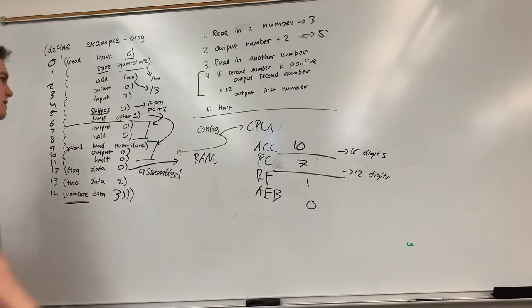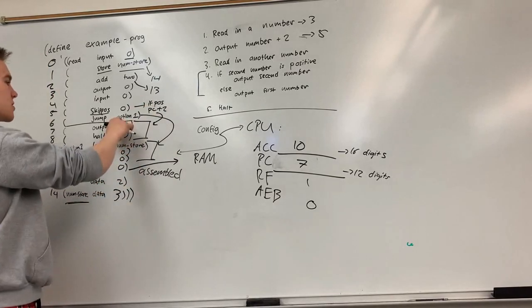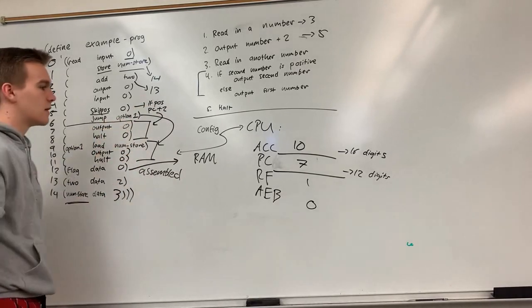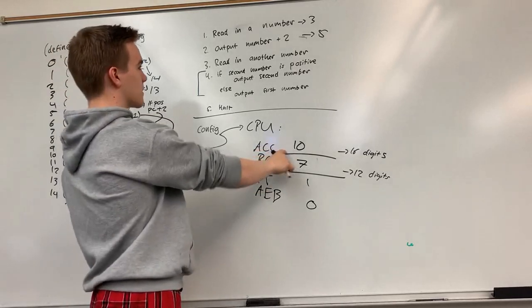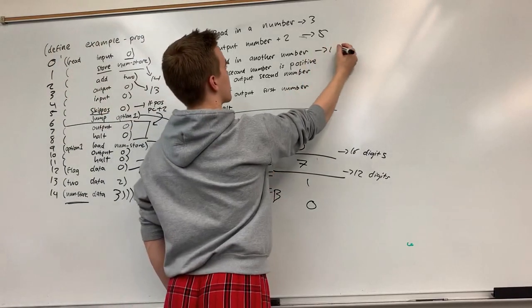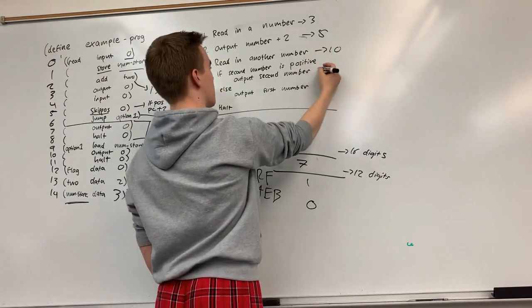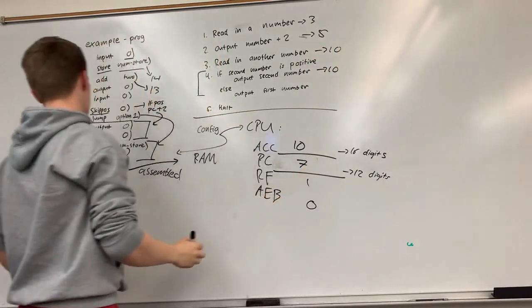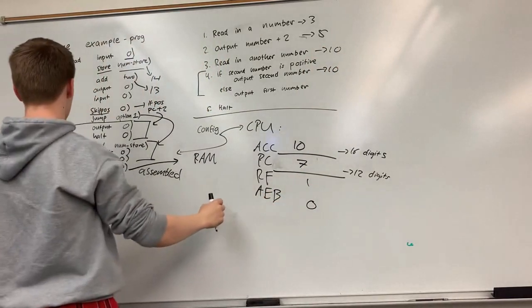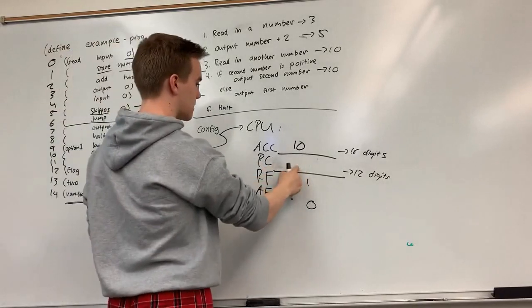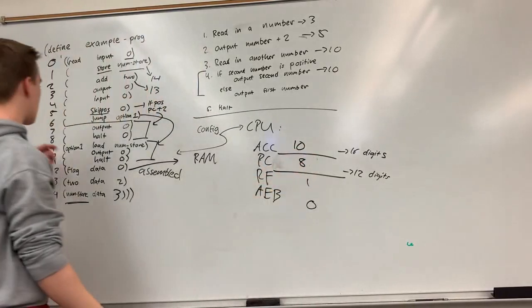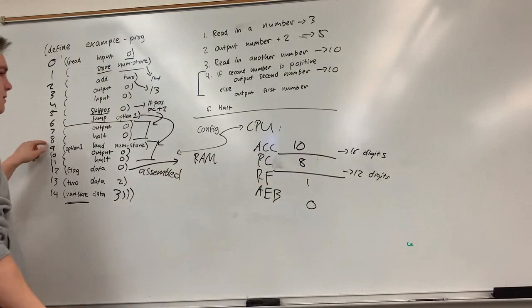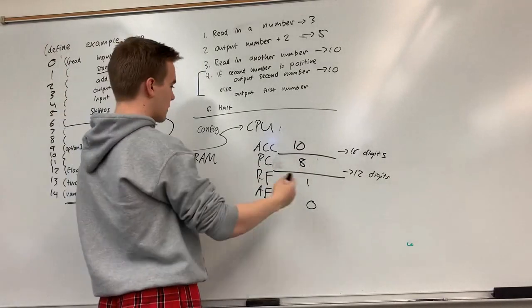So my input was positive, I skipped this instruction, and I went to output zero. So here I'm going to output the number 10. So we read in number 10, 10 is positive, so we're outputting the number 10. And then my program counter will increase to eight. That will tell me to halt, and I'll finish.